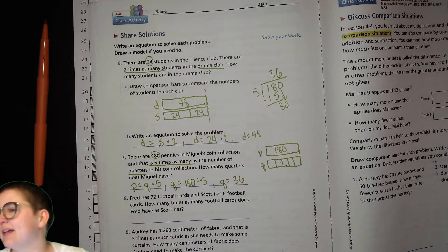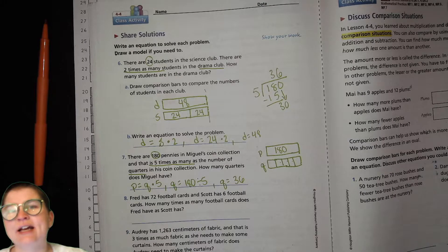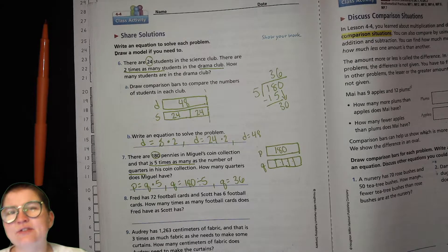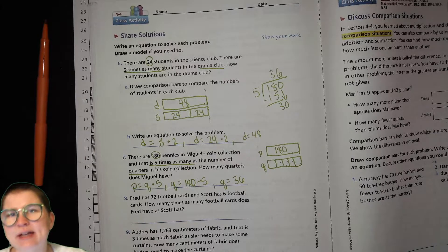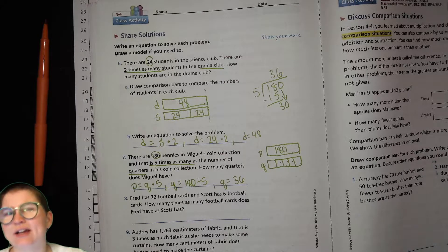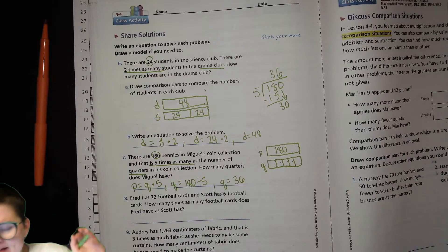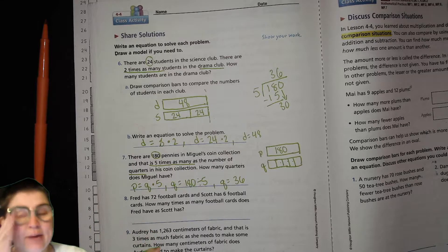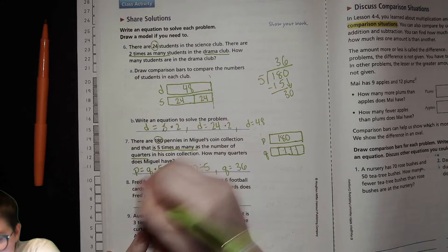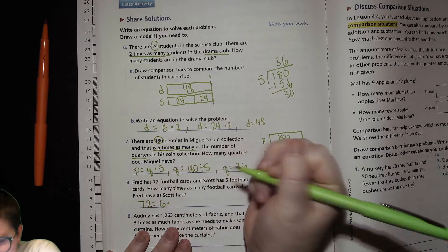All right, next one. Fred has 72 football cards. And Scott has six football cards. How many times as many football cards does Fred have as Scott has? It's such a weird sentence. But it's basically saying 72 is six how many times. So turn that into a sentence. 72 is six times.